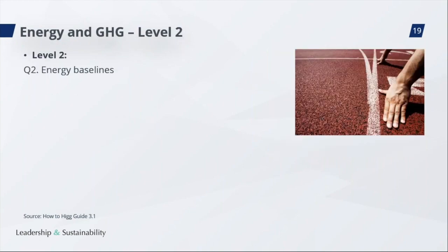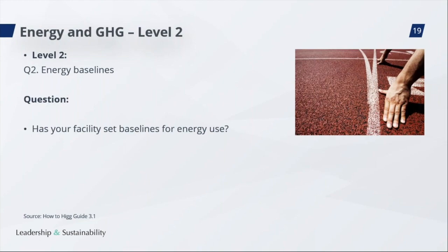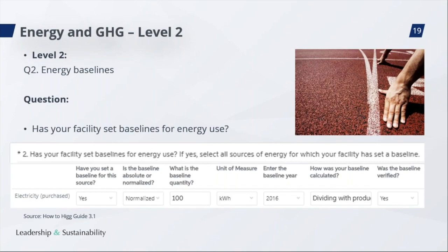At level 2, the first question is: has your facility set baselines for energy use? The intent is that it's important to know your starting point – a baseline provides a clear reference point for ongoing energy performance tracking and target setting. During verification, we will ask you to explain how the baseline was calculated, whether absolute or normalized, and we will check the unit of measure. The drop-down list contains units of measure only for absolute baselines, but you can still add normalized values and describe how the baseline was calculated.